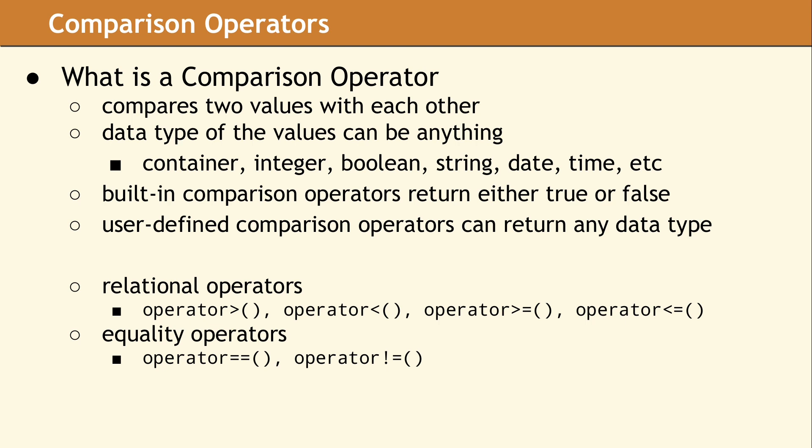There are six comparison operators. Four of them are called the relational operators, and they compare two values to determine which one is larger. The two equality operators determine if two values are equal or not equal. There are multiple built-in comparison operators which are part of the C++ core language. For example, some of these compare two integers or two pointers. There are additional comparison operators provided in the standard library that do things like comparing the values of an STD string or an STD tuple. The comparison operators provided in the standard all return a boolean indicating if that particular test is true for the given objects. User-defined comparison operators are allowed to return any data type. However, the preferred type is always a boolean.